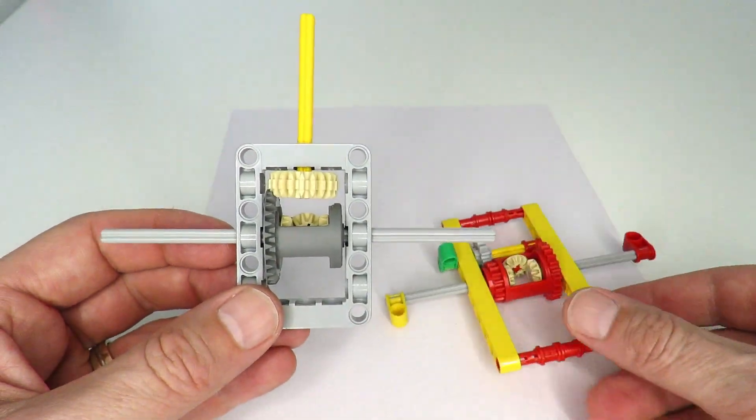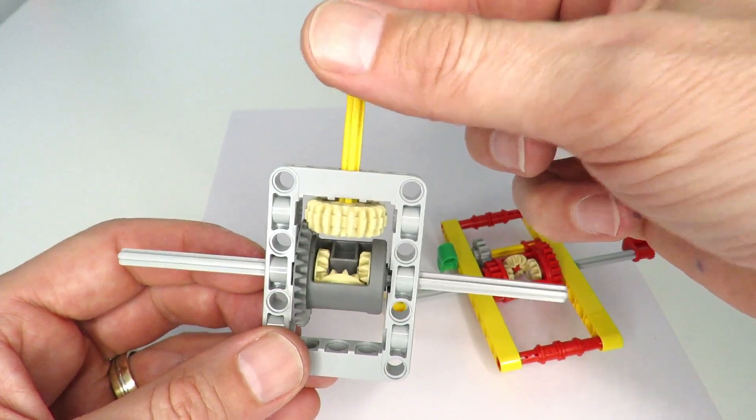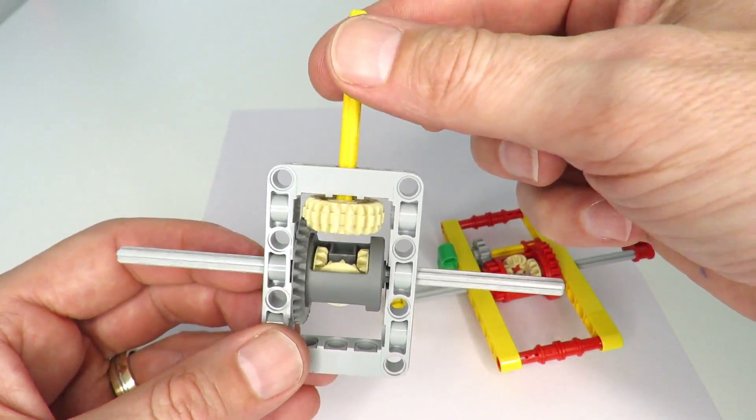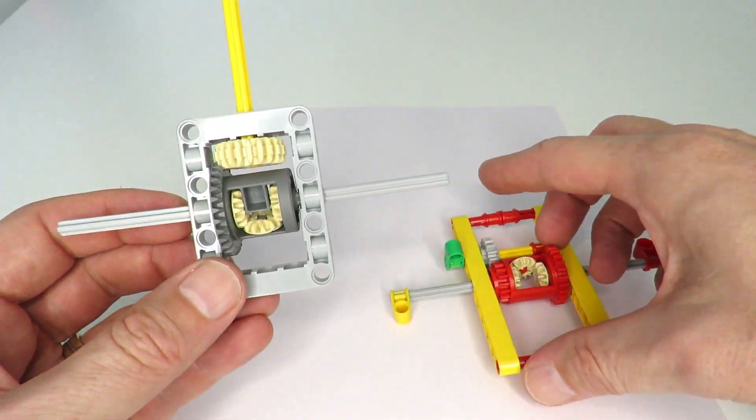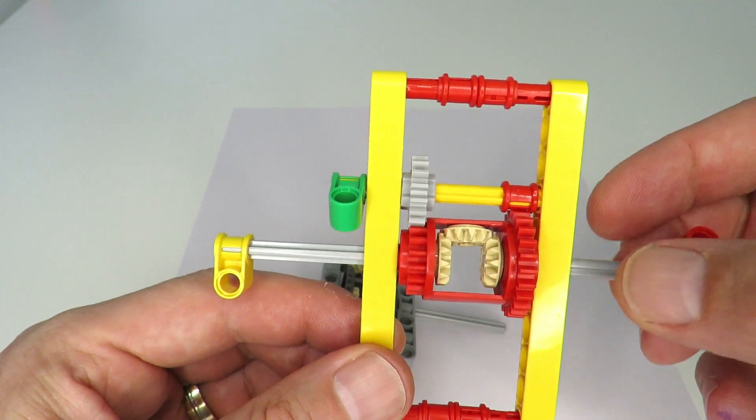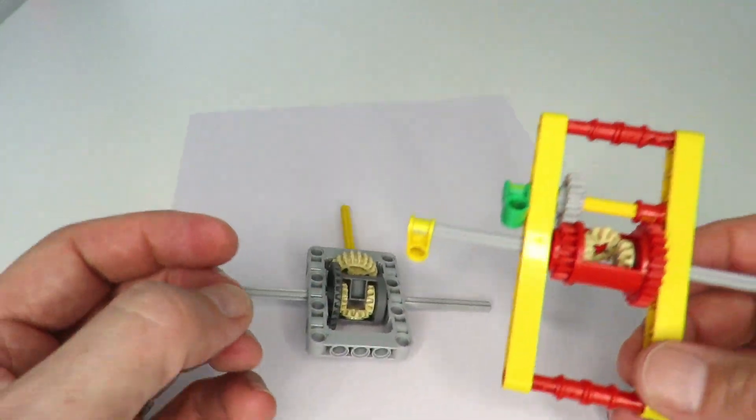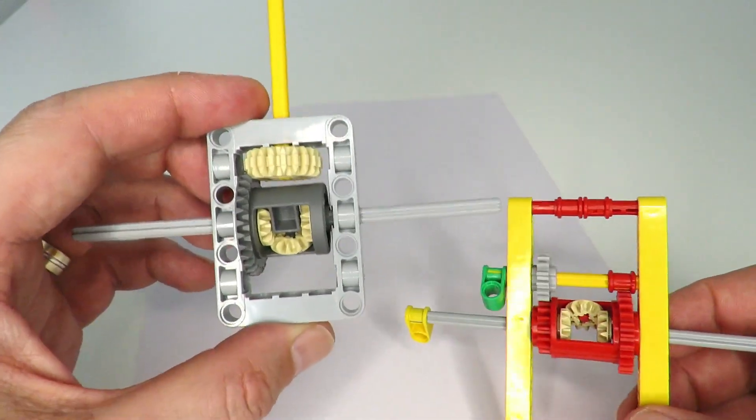For this one here, we've got the driving shaft coming out perpendicular to the wheel shaft, and on this one, the driving shaft is in parallel.